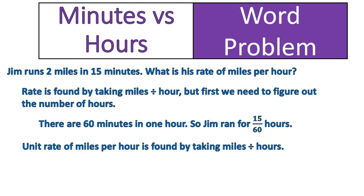Now we need to calculate something called the unit rate. The unit rate is the number of miles he runs per one hour. Unit rate just means the rate of something being done with a one in the denominator — miles per one hour. The unit rate is found by taking miles divided by hours. The number of miles was 2, divided by his hours, which is 15 over 60.